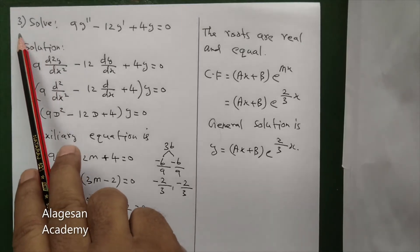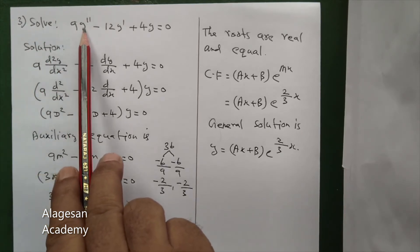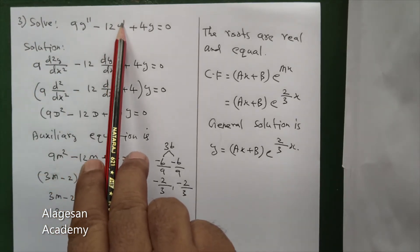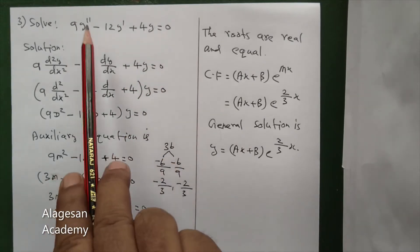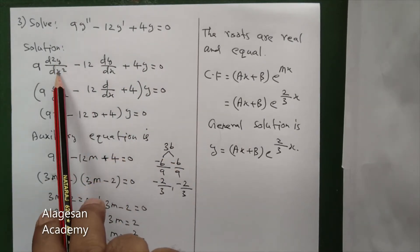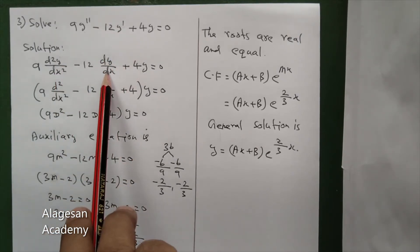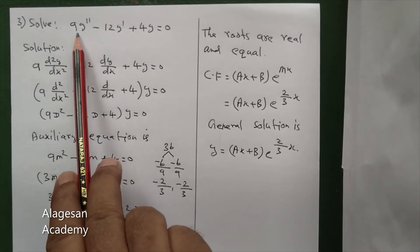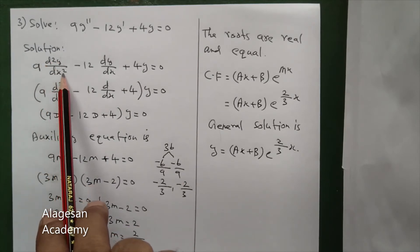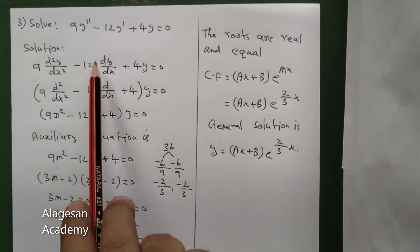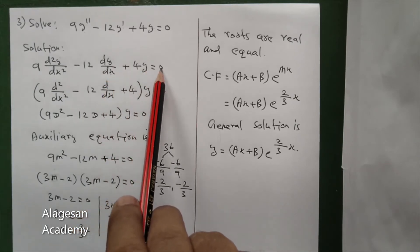Hi student, see question number 3. Solve 9y double dash minus 12y dash plus 4y equal to 0. Now y double dash means d squared y by dx squared, y dash means dy by dx. So the first step will be: 9 d squared y by dx squared minus 12 dy by dx plus 4y equal to 0.